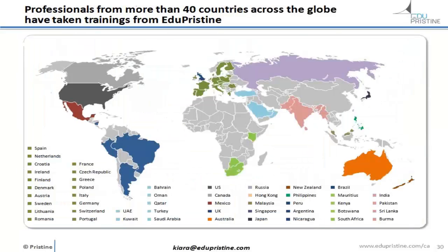People all around the world can access EduPristine's online training, and people from around the world can also access classroom training. In Sydney and Melbourne there are plenty of sessions; there are also plenty in India, and discussions about ones in Dubai, the UK, and other parts of the world. So it's a company that can take training to where you are, or take training to yourself or colleagues you may have in other organizations or parts of the world.